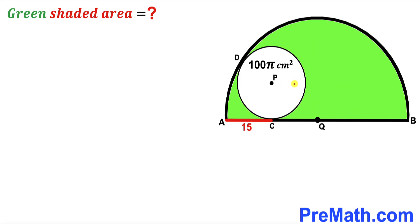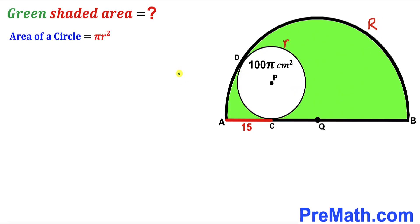We will assume the radius of the white circle is lowercase r and the radius of the semicircle is uppercase R. Our task is to find both the value of lowercase r and uppercase R. Let's recall the area of a circle formula.